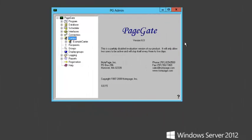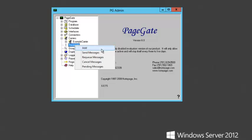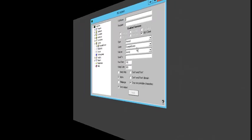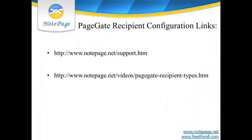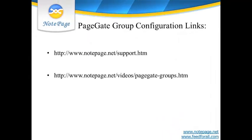Once you have a carrier created, next we'll need to add a recipient. To add a recipient, right-click on the Recipient section and left-click on Add. For a more detailed explanation of what each field in the recipient setup means and how to configure them, have a look at the PageGate section of our video tutorial. For information on how to add and populate a group, have a look at our Groups video tutorial as well.